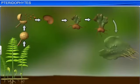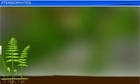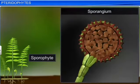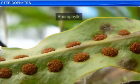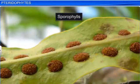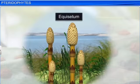In case of the pteridophytes, the main plant body is the sporophyte, which is differentiated into true roots, stems, and leaves. These organs possess well-differentiated vascular tissues. The leaves in pteridophytes are small — that is the microphylls, as in the case of Selaginella — and as the strobili or cones in case of Equisetum.